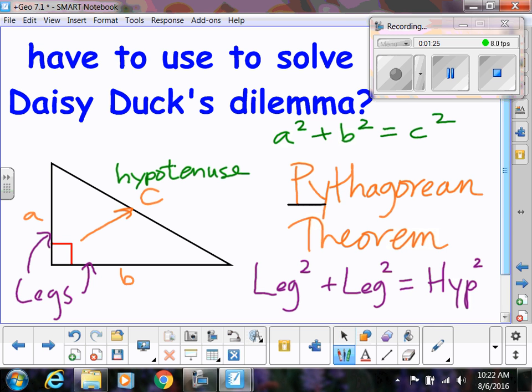Pythagorean theorem only works if you have a right triangle. So a triangle is right if it has one 90 degree angle in it. And in a right triangle, the side across from the 90 degree angle, which is also going to be the longest side, is called the hypotenuse.